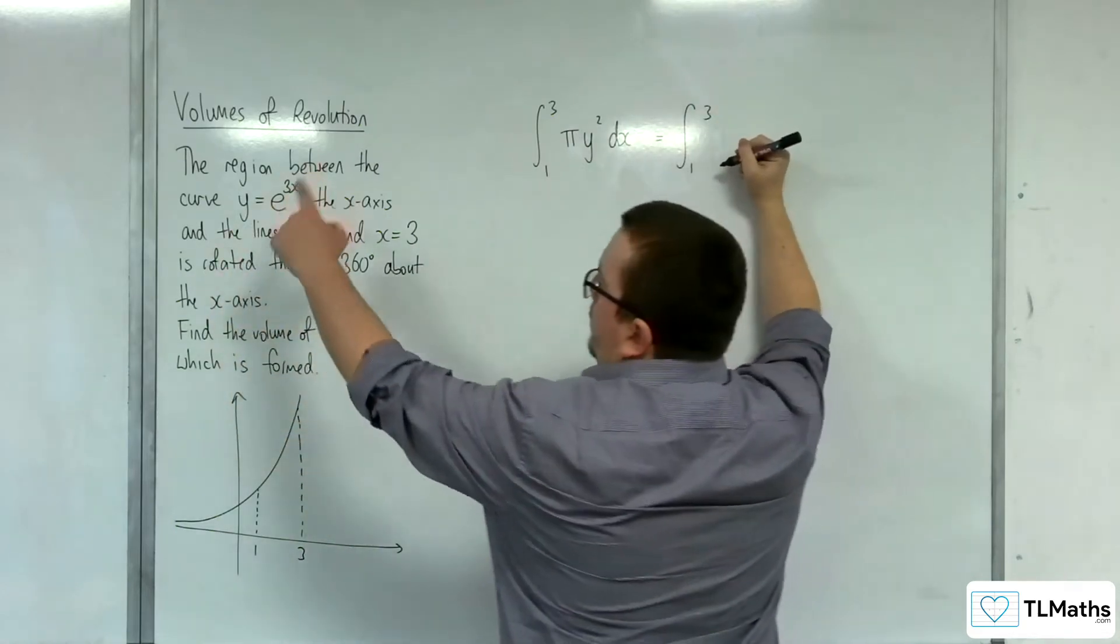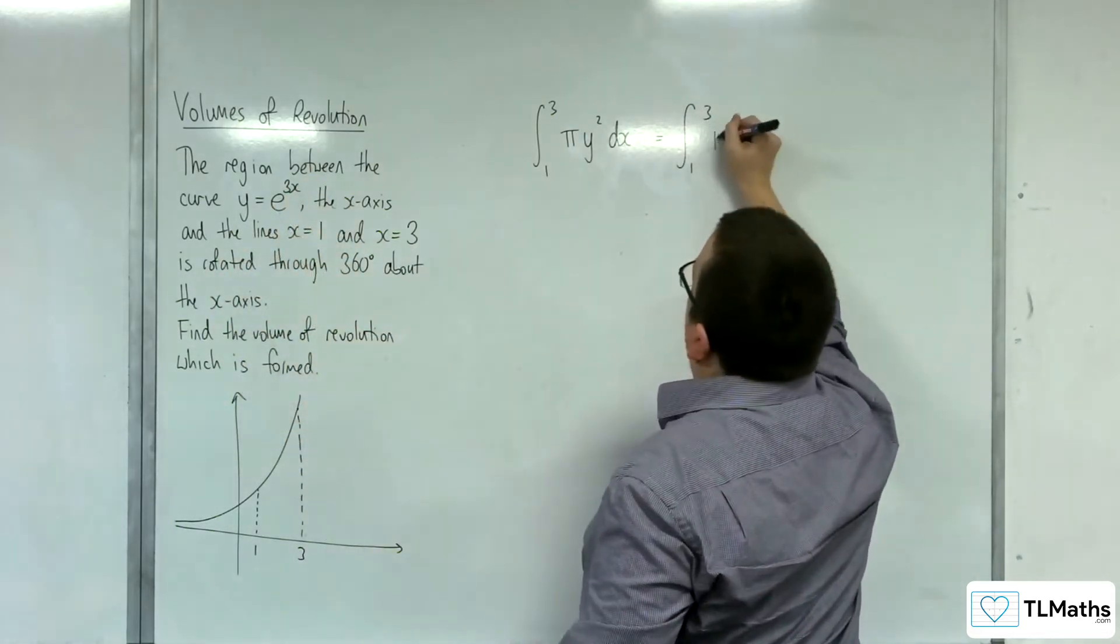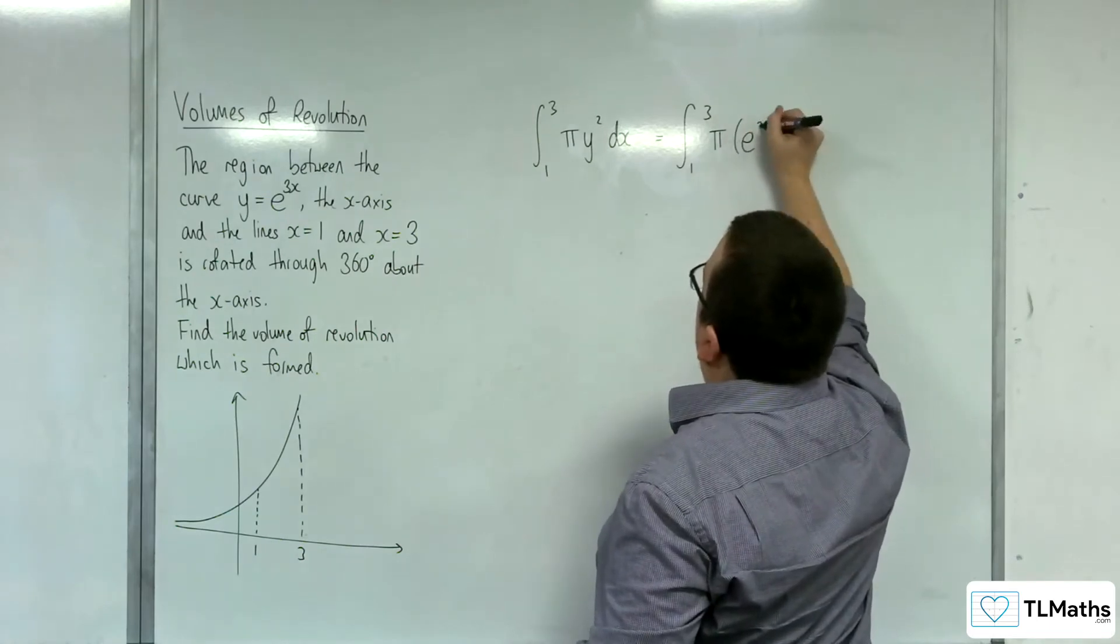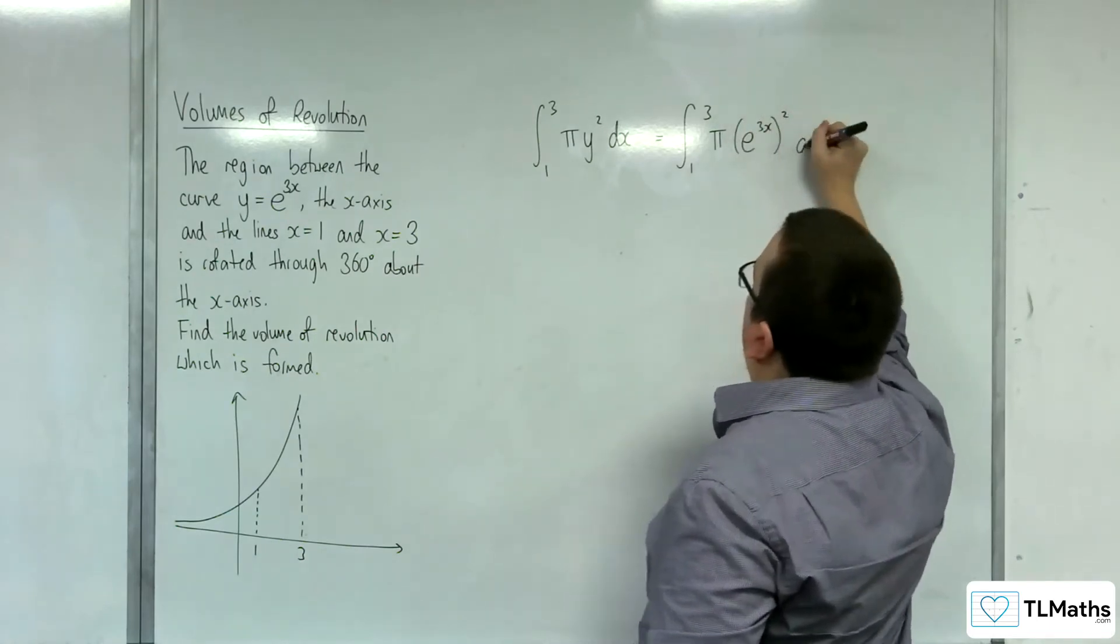Now, y is e to the 3x, so we can write that as pi times e to the 3x, all squared, dx.